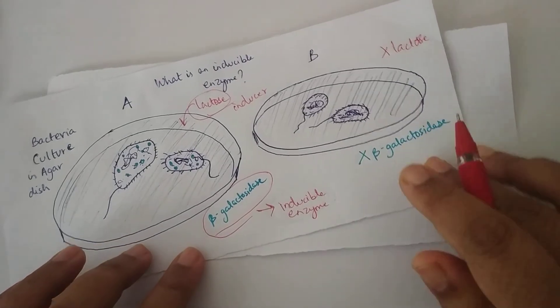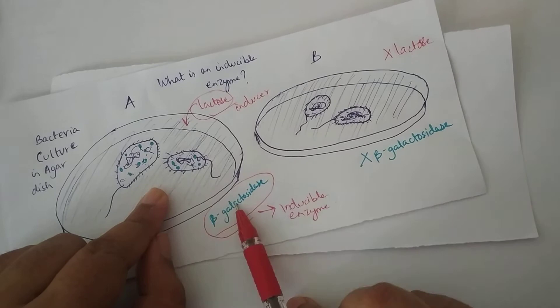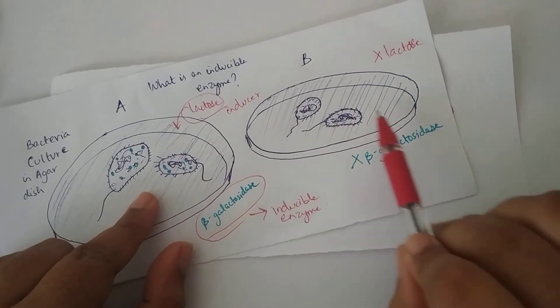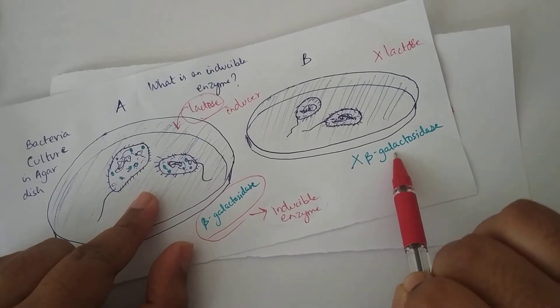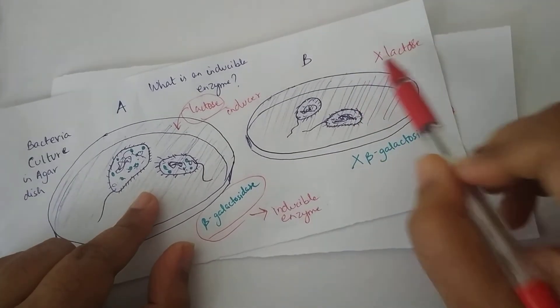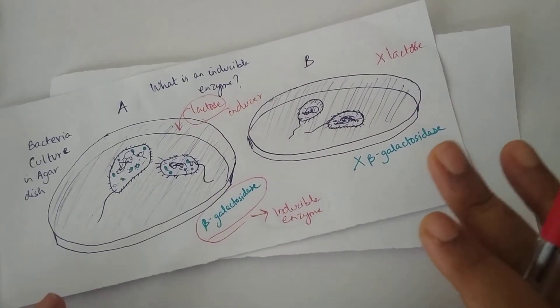So the basic idea over here you need to understand at the molecular level is here the gene coding for beta galactosidase is getting expressed, whereas here the gene is not getting expressed because the gene needs an inducer to stimulate it. This inducer is not here. That is the whole idea of an inducible enzyme.